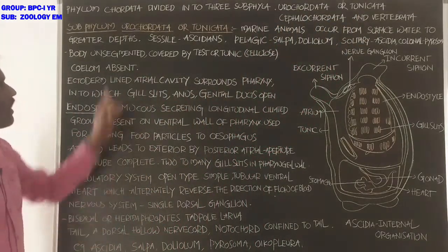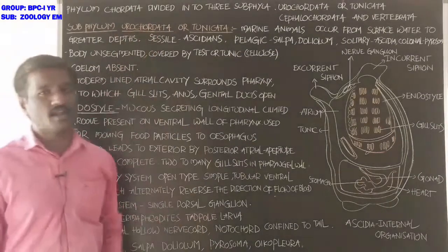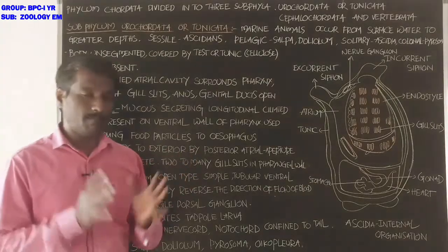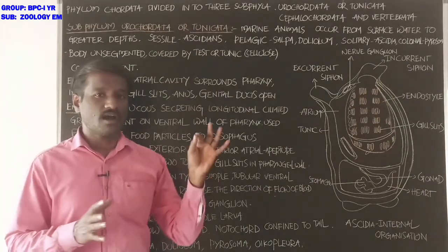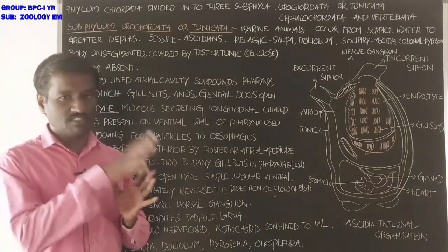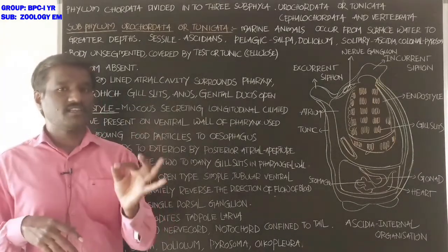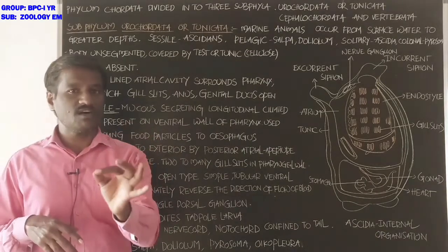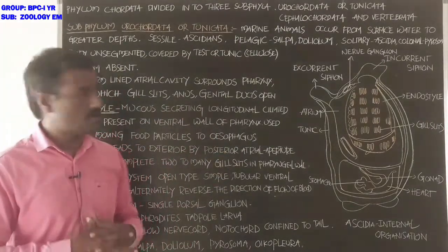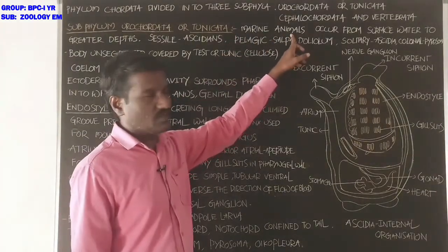Now we discuss about subphylum Urochordata, also called Tunicata. The animals present in this subphylum show characteristic features. These are marine animals.